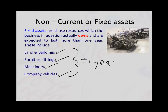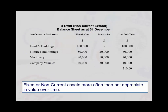Now they may not last more than one year, but the point is that you would put them in this category as a non-current or fixed asset, because the expectation by the accountant is that this will be a resource used for greater than one year. When you come to put together a vertical balance sheet, the first part of the balance sheet will be the category of non-current or fixed assets.